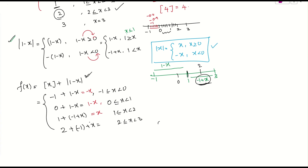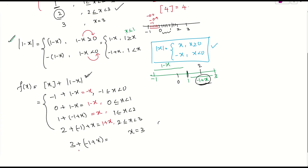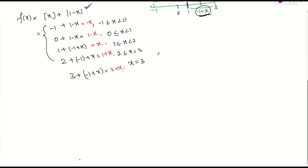So our piecewise function is now defined. To check differentiability, we need the left-hand derivative to equal the right-hand derivative at each breakpoint. We also know that if a function is continuous, it implies differentiability. So first, let us directly check continuity at the breakpoints 0, 1, 2, and 3.